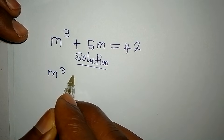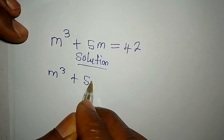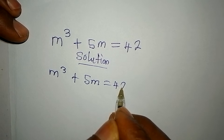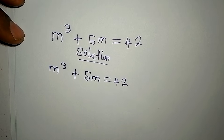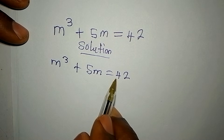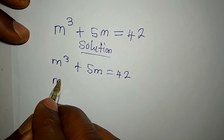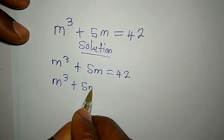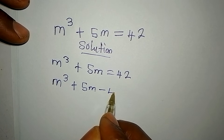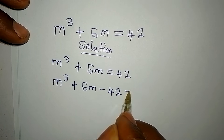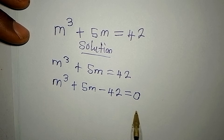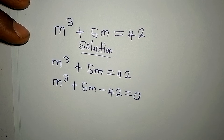The solution: we have m to the power of 3 plus 5m equal to 42. Now I want to bring 42 to the left, so m to the power of 3 plus 5m minus 42 is equal to 0, because nothing is on the right-hand side now.